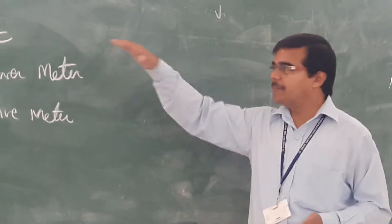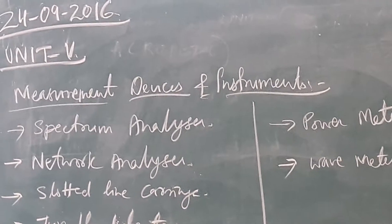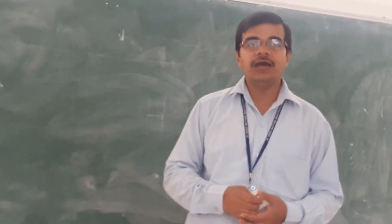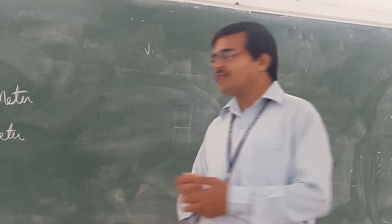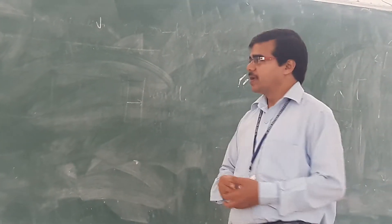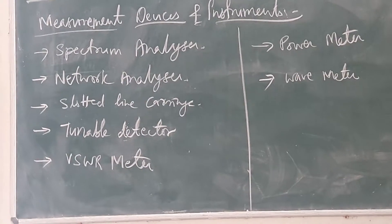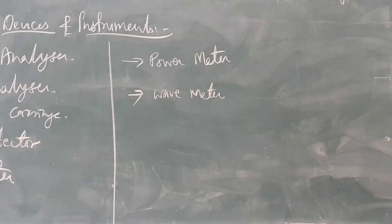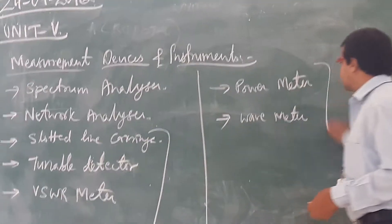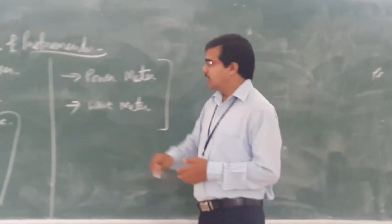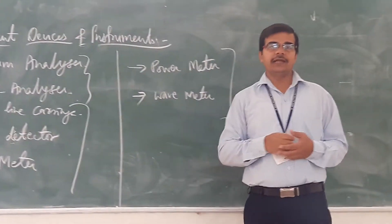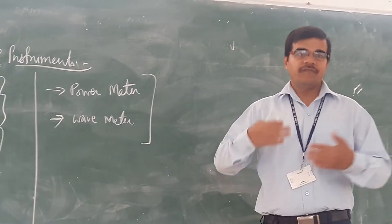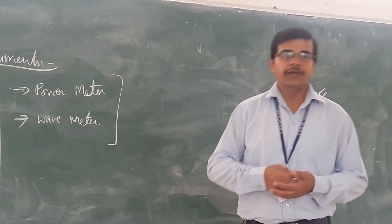Today's topic is measurement devices and instruments. The different measuring devices and instruments at microwave signal labs include: spectrum analyzer, network analyzer, slotted line, tunable detector, VHF transmitter, power meter, and wave meter. Not all of these will be found in your lab — they are very costly, so you will not find them in educational institutions.